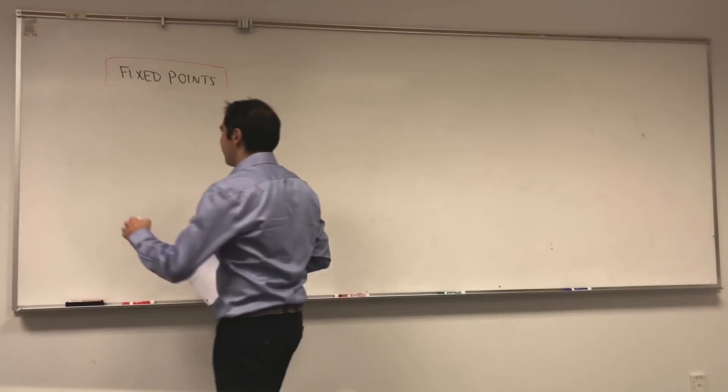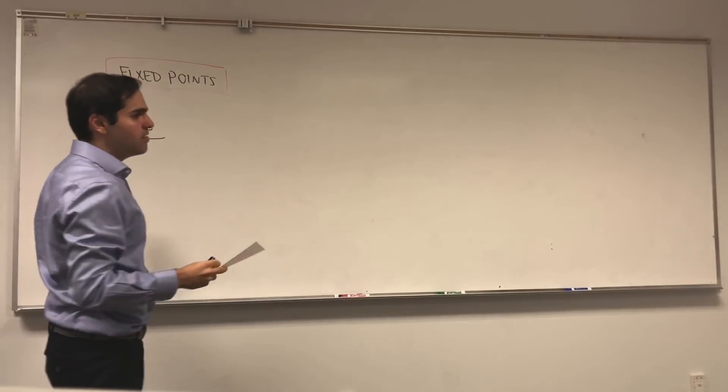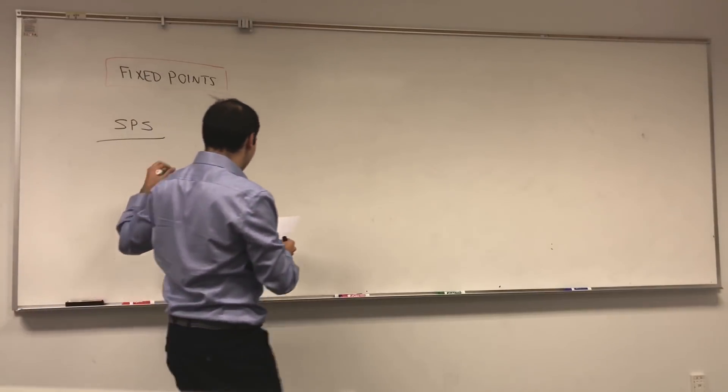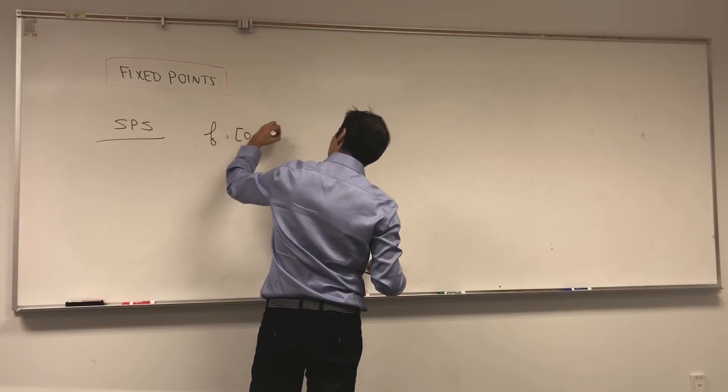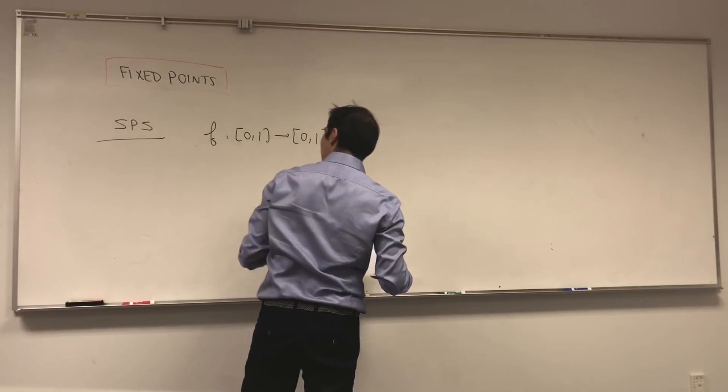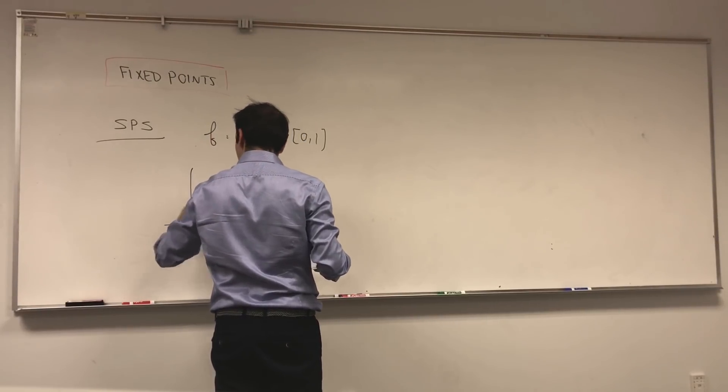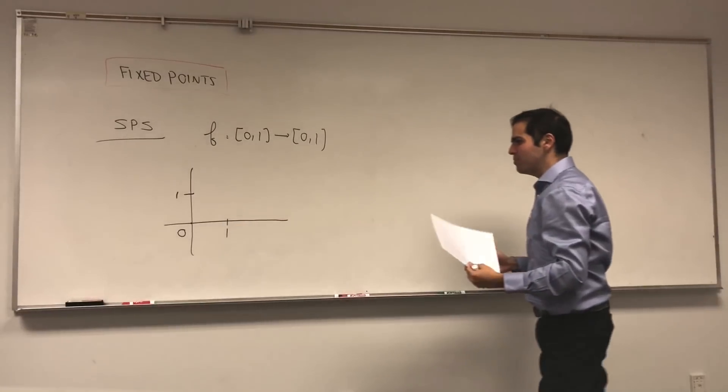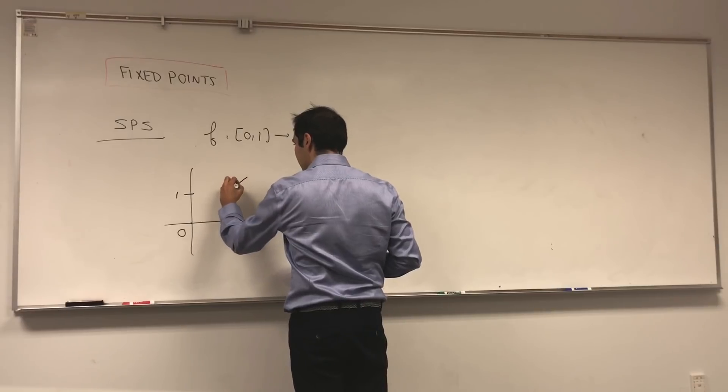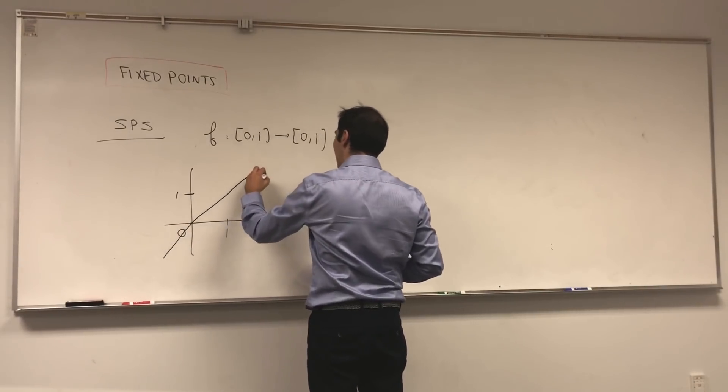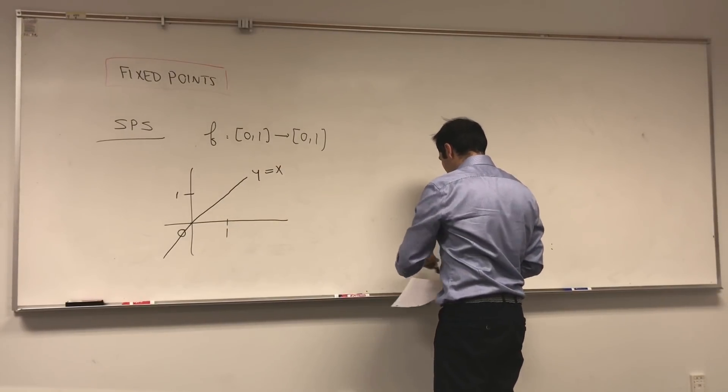This fact has to do with fixed points, which really means crossing the line y equals x. So suppose you have a function from (0,1) to (0,1). In other words, a function with domain (0,1) that's never bigger than 1, always between 0 and 1. And the question is, can you draw this without crossing the line y equals x?